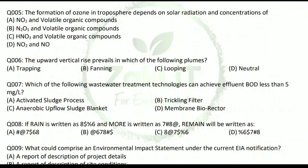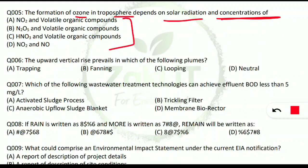Question 5 is from ozone and troposphere — a very important and frequently asked topic. The question: formation of ozone in the troposphere depends on solar radiation and the concentration of which compounds? Option A is correct: nitrogen dioxide (NO₂) and volatile organic compounds (VOCs) are the major contributors to ozone formation in the troposphere, along with solar radiation.